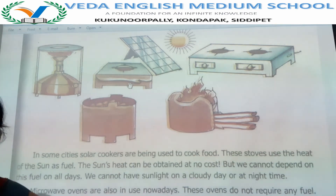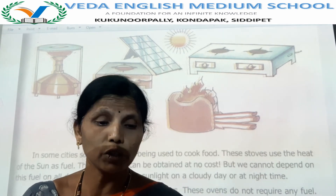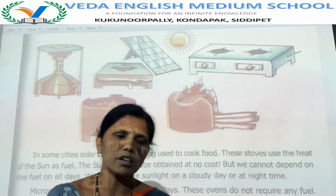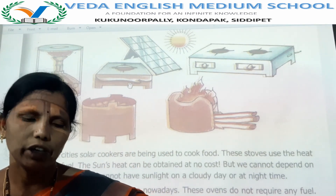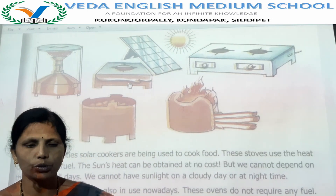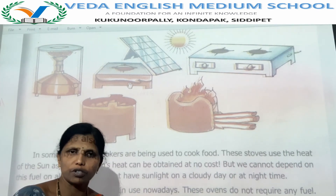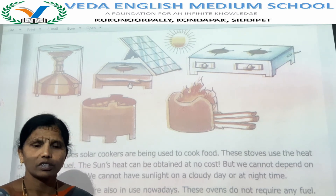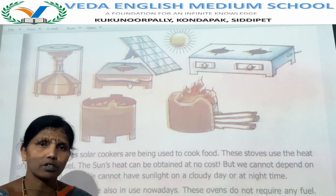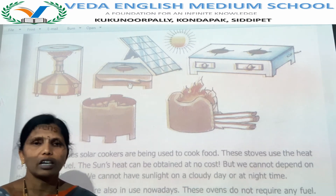Did you understand this lesson? What we have learnt: we get food from farmers, who are the backbone of the nation. We use different kinds of utensils to cook food. Various types of stoves are used to cook food, and different fuels are used to cook our food. Good. Thank you.